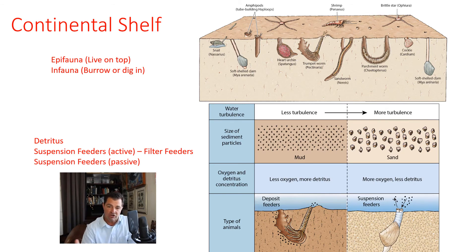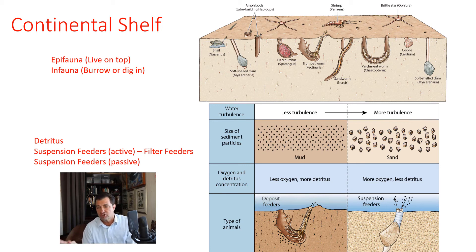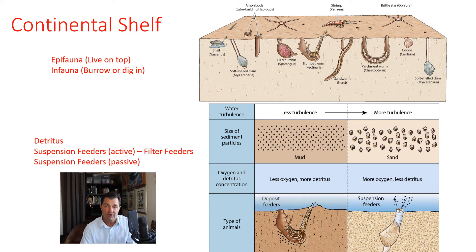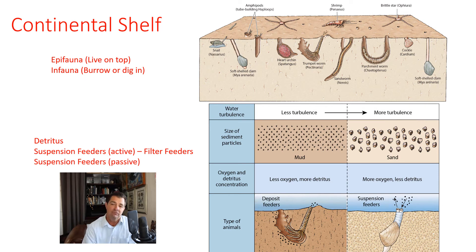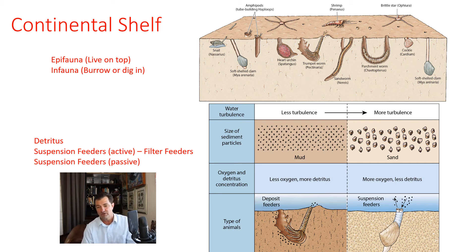On the continental shelf, starting with the sandy soft bottom types of habitat, there are sort of two different groups of organisms. Those that live on top, which we call the epifauna. And then there are those that burrow into the sand or into the substrate — kind of like when we talked about mudflats — and we call these the infauna. So we have the epifauna on top and the infauna burrowing or digging into the sand.